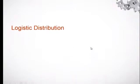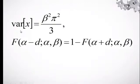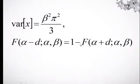For the variance of the logistic distribution, the variance is equal to beta squared times pi squared over 3. Also note that F(α − t; α, β) = 1 − F(α + t; α, β), reflecting the symmetry of the distribution.